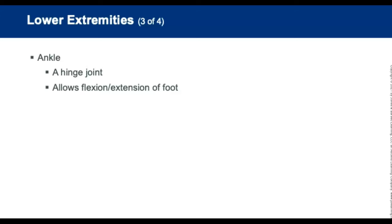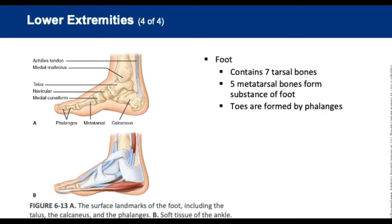The distal ends of the tibia and fibula articulate with the talus to form the ankle. The foot contains seven tarsal bones. The talus and calcaneus are the largest bones. Five metatarsal bones form the substance of the foot. The plantar surface is the bottom and the dorsum is the top. There are five toes formed by 14 phalanges — two phalanges in the big toe and three phalanges in each of the smaller toes.